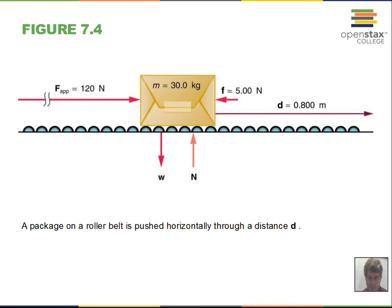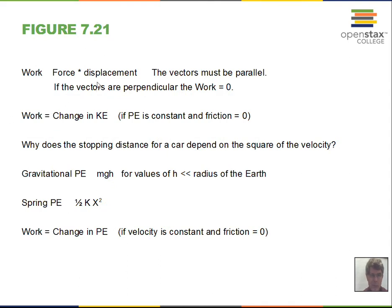In this situation, will the box speed up? There's 120 Newtons pushing and 5 Newtons of friction back, giving a net force of 115 Newtons — the box will speed up. There's a relationship between work done and kinetic energy, calculated as one-half times mass times velocity squared. The net work done equals the change in kinetic energy. This is called the work-energy theorem.